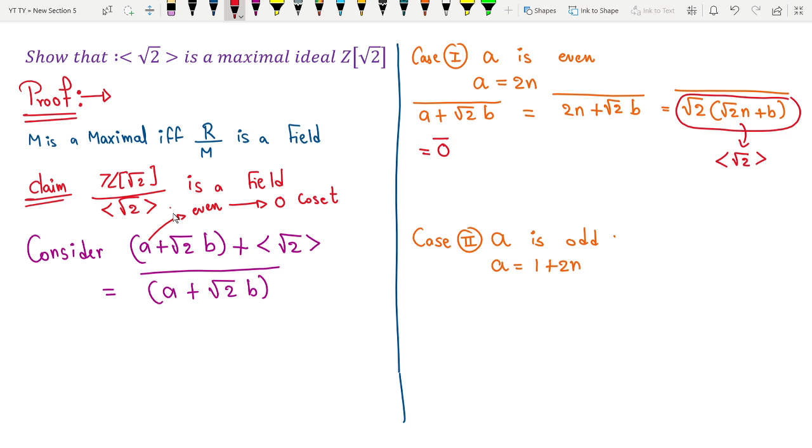Now let's talk about when it's an odd number. I think the student can even guess what it should be. So it is a plus root 2b, that is same as 1 plus 2n plus root 2b. Now you can see why I was writing 1 plus 2n, because now I am going to take root 2 common.